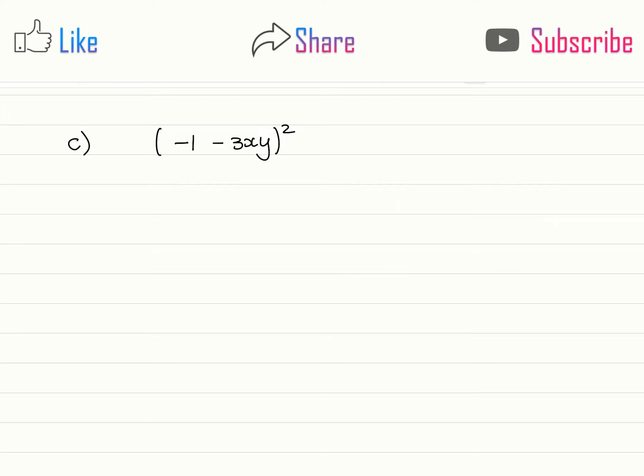In our third example we have negative 1 minus 3xy squared. So let us expand. When we expand we have two brackets that look exactly the same that we will multiply with each other.